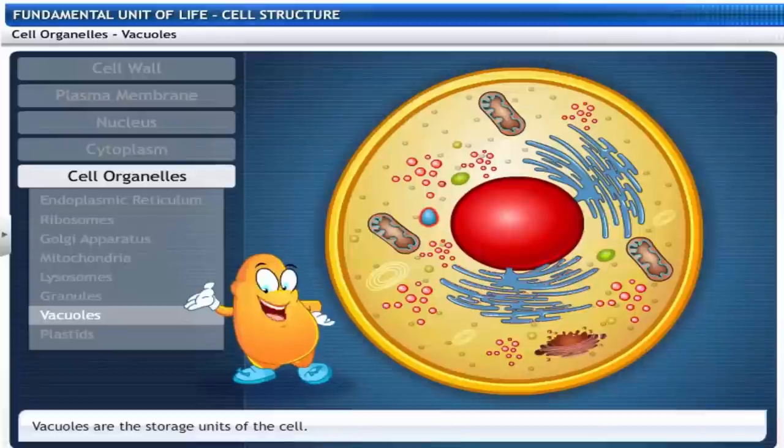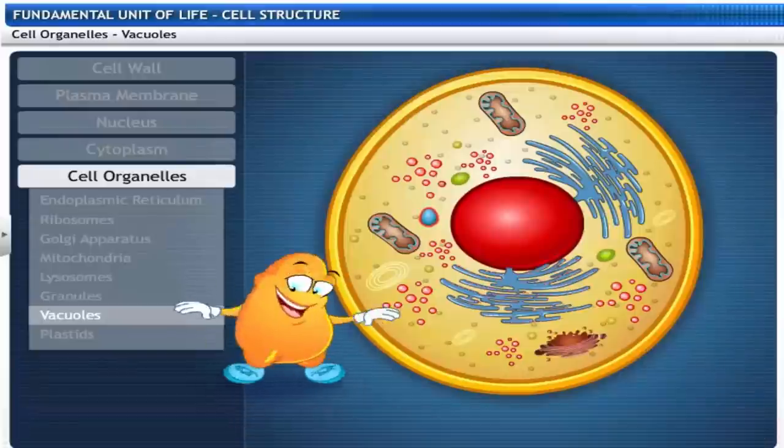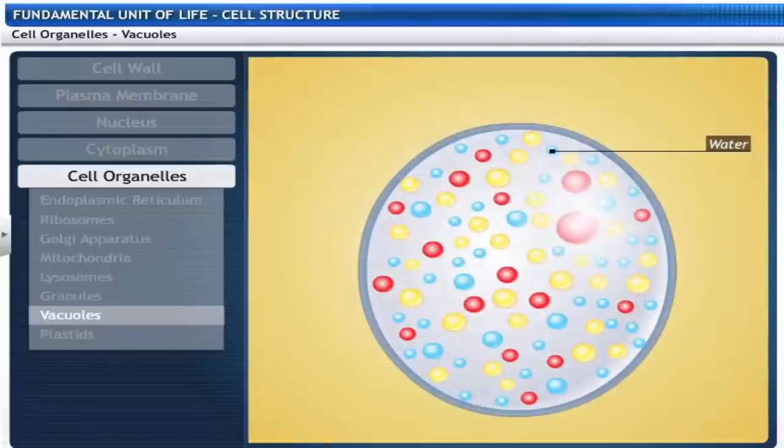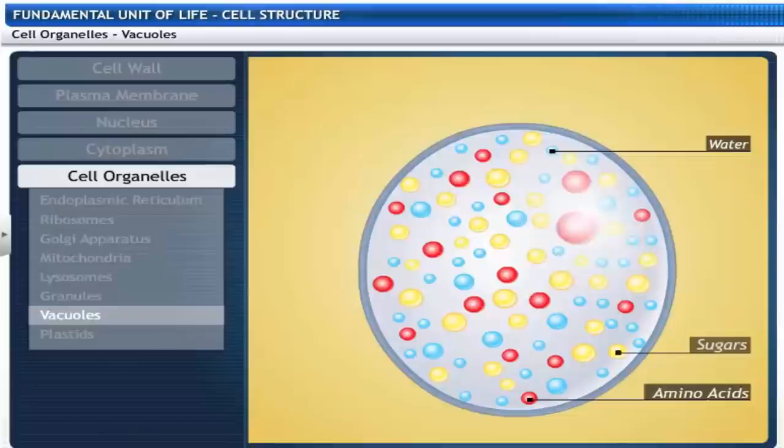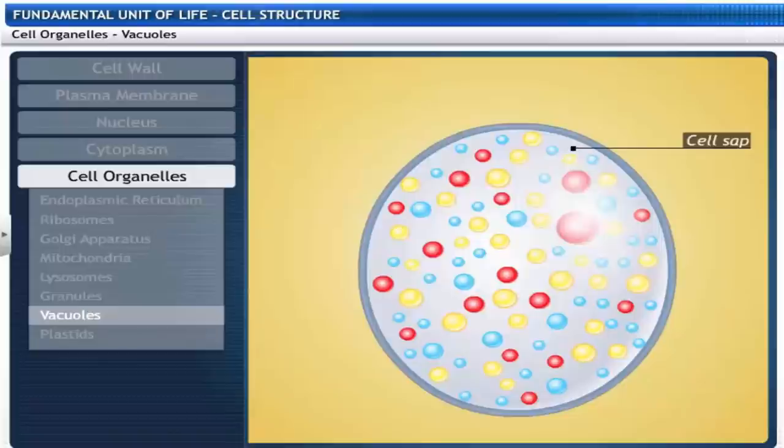Cells have storage units called vacuoles. They store water, energy and waste products and substances like amino acids, sugars and proteins. The fluid contained in them is called cell sap. A vacuole is covered by a living membrane called tonoplast.